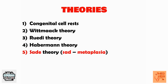Seid theory states that because of repeated infections, the epithelium undergoes metaplasia and forms keratinizing squamous epithelium — just as repeated infection or injury to any part of the body causes metaplasia. A mnemonic: metaplasia is a sad thing to happen, so remember Seid for metaplasia. This leads to formation of cholesteatoma.